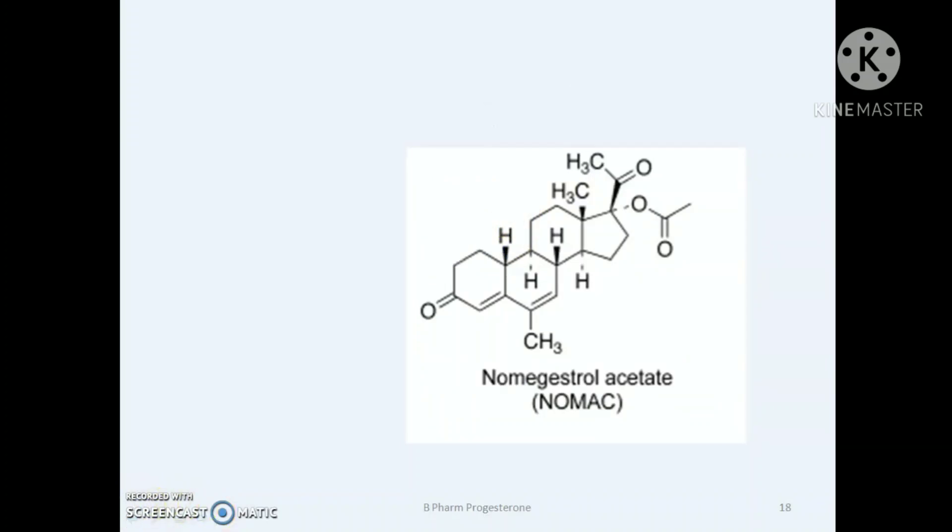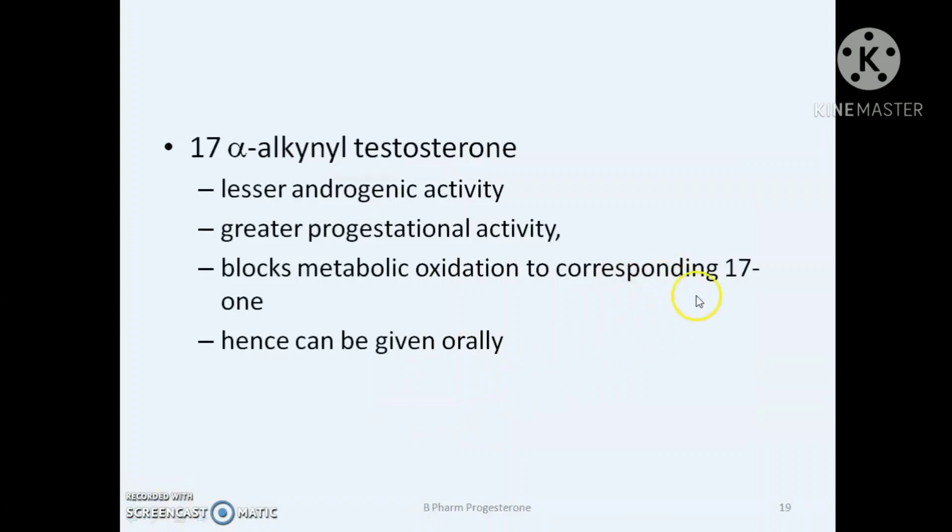Next class of progesterones is 17-alpha alkynyl testosterone derivatives. An alkyne group, C triple bond CH, is introduced at the 17th position. These derivatives have lesser androgenic activity even though it is a testosterone derivative. They have lesser androgenic activity and more progestational activity. The introduction of an alkynyl group blocks the metabolic oxidation to the corresponding 17-ketone and hence can be given orally.